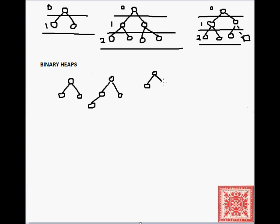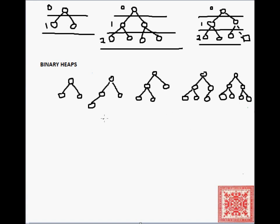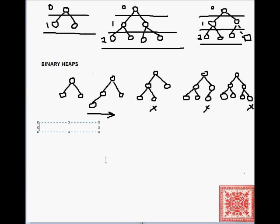Let's say we want to build a binary heap with three levels. First we fill the first two levels, and then we fill up the third level — level number 2 — going left to right. The leftmost position is filled, then the second-leftmost, then the third-leftmost, and then the fourth-leftmost. So we have a complete binary tree which, structurally speaking, is a binary heap — because we still have to satisfy a certain mathematical property. The nodes have to satisfy certain properties.